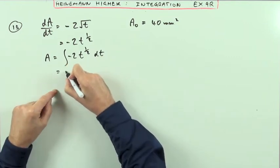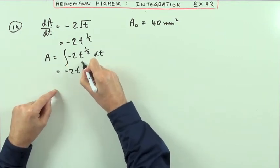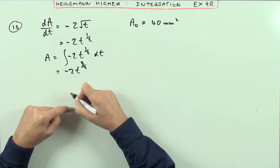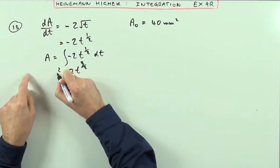So that's going to be -2t, add 1 to the power, divide by that new power, or better, multiply by the reciprocal. I'll just create a bit of space here.